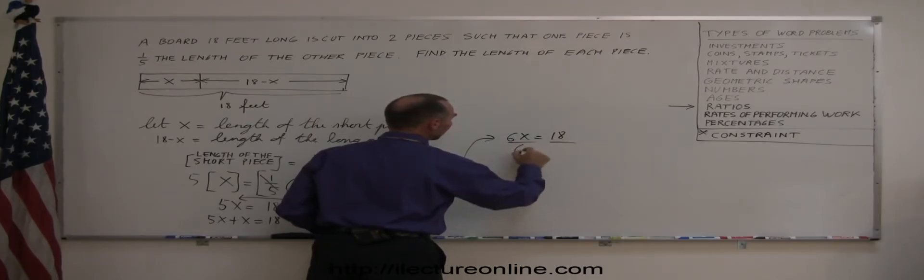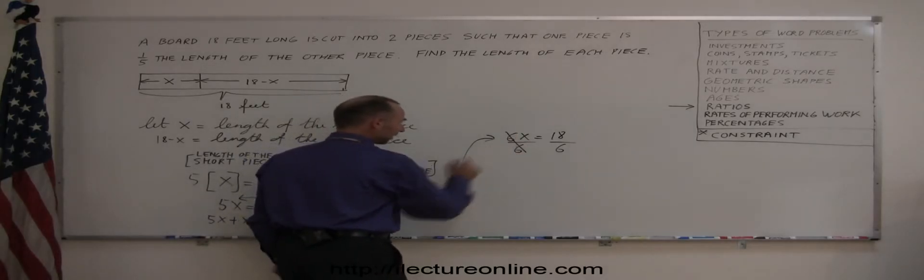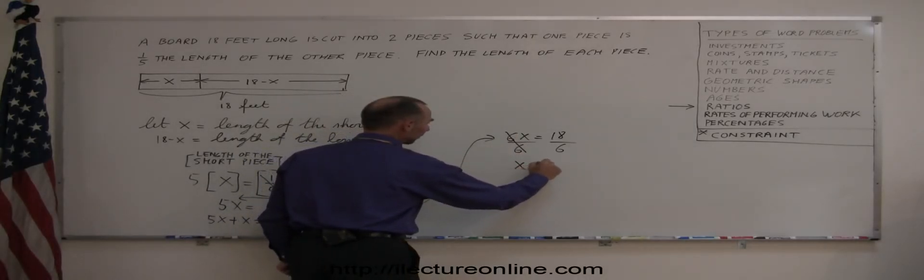And the last thing we do, we divide both sides of the equation by the numerical coefficient in front of x, the number in front of x, that cancels out, so we have x equals 3.